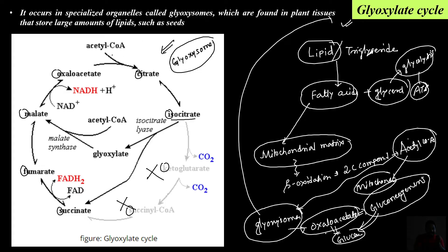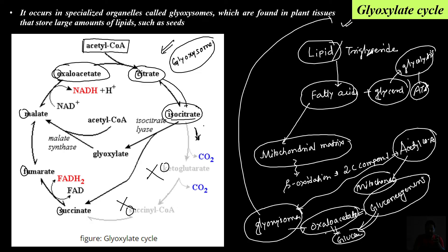The starting point of the glyoxylate cycle is acetyl-CoA. Acetyl-CoA combines with oxaloacetate to form citrate. Citrate is converted to isocitrate. Then, isocitrate is bypassed — instead of going to alpha-ketoglutarate, isocitrate is converted directly to succinate and glyoxylate by the enzyme isocitrate lyase.